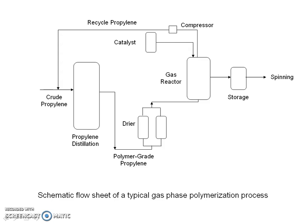As can be seen in the schematic flow sheet of gas phase polymerization, crude as well as recycled propylene is purified by distillation. The distillate is dried with alumina in a dryer. The dried liquid propylene is added to the bottom of the polymerization reactor and catalyst is added from the top.